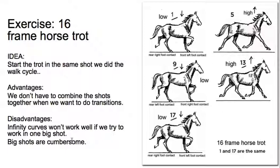The disadvantage of working in the same shot is that your infinity curves won't work as well if you're trying to do both the walk and the trot in the same shot, and big shots generally get a bit cumbersome. So I would recommend doing it in a separate shot, unless you have a real yearning to do the transition, in which case you might want to stay working in the same shot.